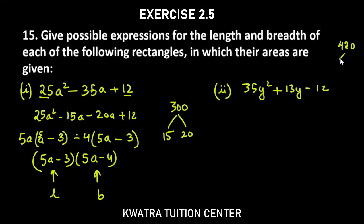For 420 you can write factors like this that you will get 13. So one can be 42 x 10. This is not possible because if you subtract, you will not get 13. So one can be 28 and 15. So 28 minus 15y look at 35y² + 28y - 15y - 12.